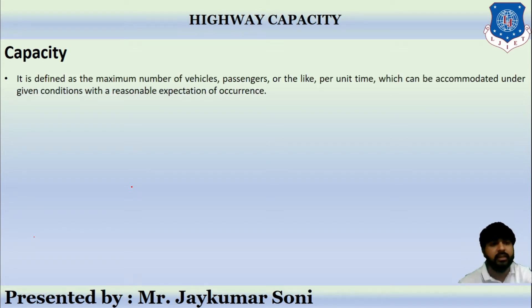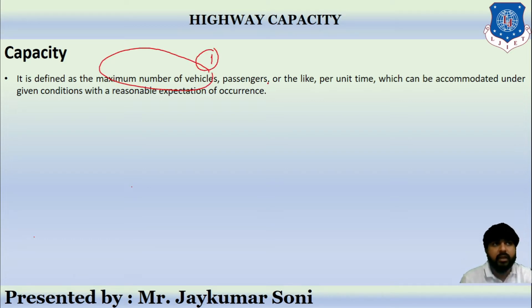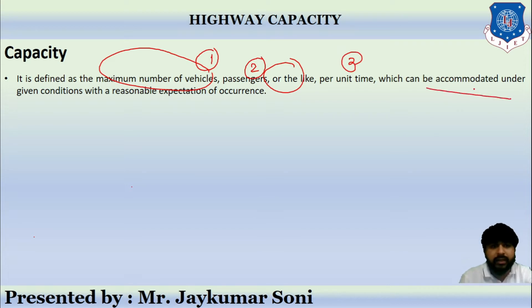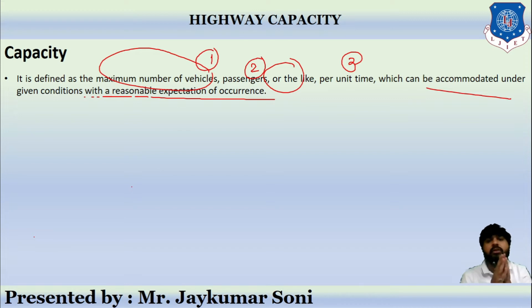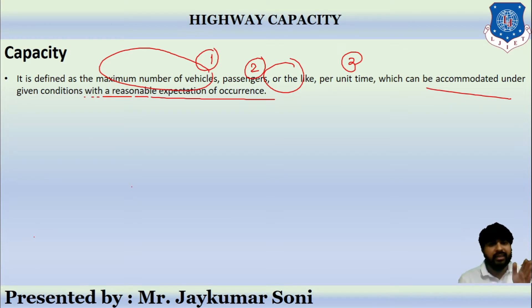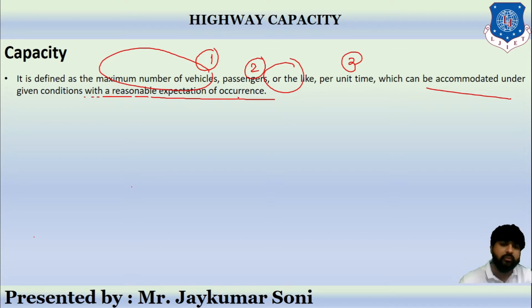Capacity is defined as the maximum number of vehicles, passengers, or anything per unit time which can be accommodated under the given condition with the reasonable expectation of occurrence. This is the meaning of capacity.